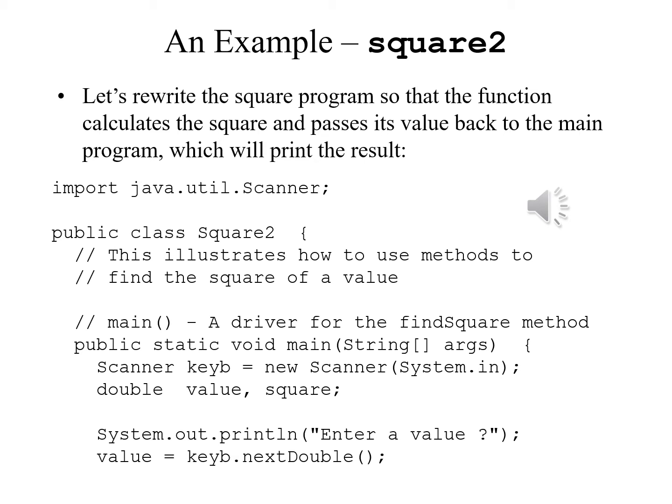As before, we begin with import java.util.Scanner, and our class begins public class Square2 with an open brace. We'll write this illustrates how to use methods to find the square value. The main program begins with public static void main string args open brace, and inside we'll declare Scanner keyboard equals new Scanner system in, and double value, square. We'll read in the new value by typing System.out.println enter a value, and then read it with value equals keyboard.nextDouble.